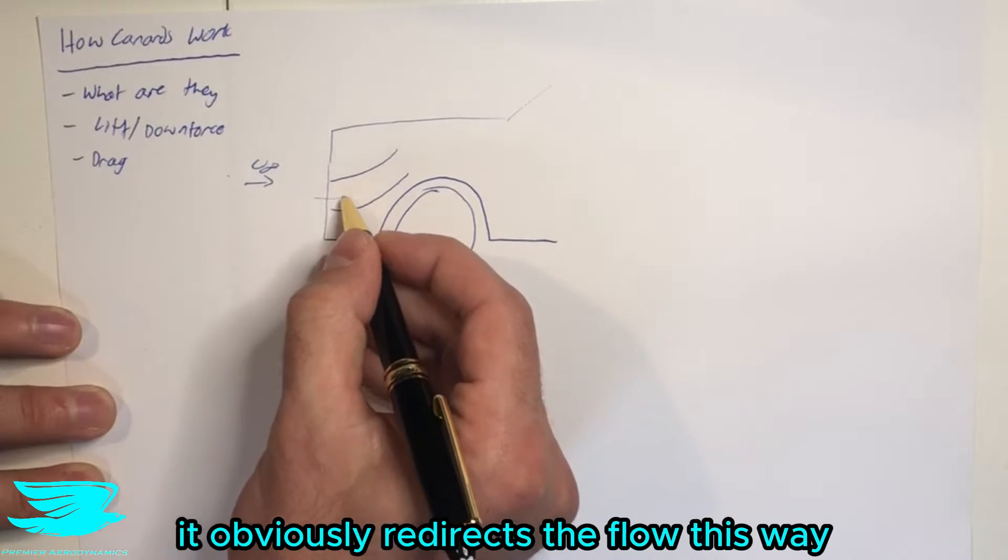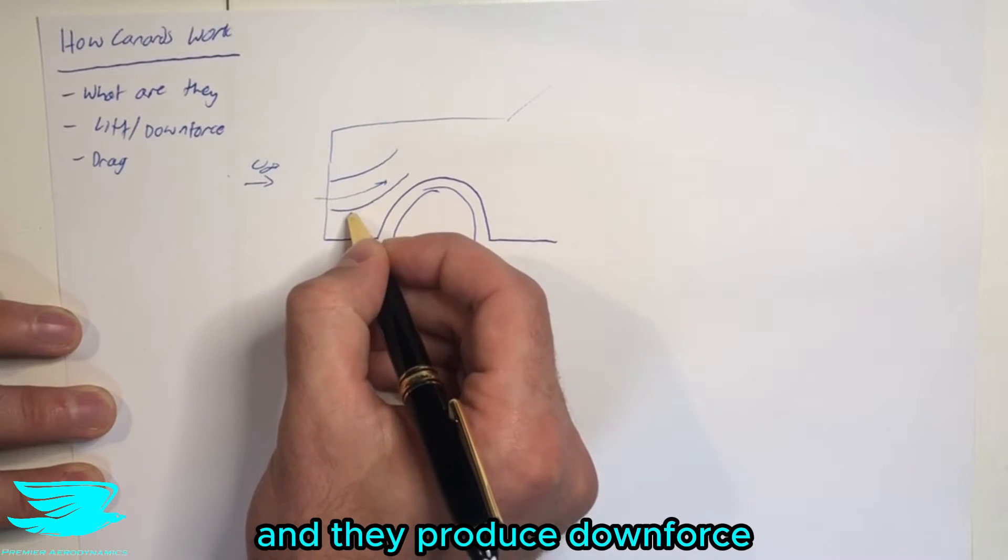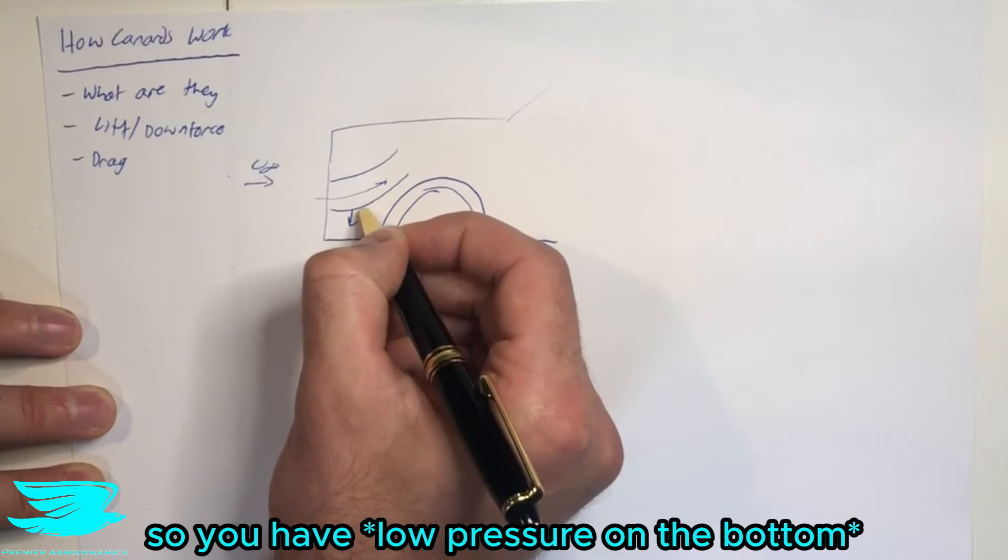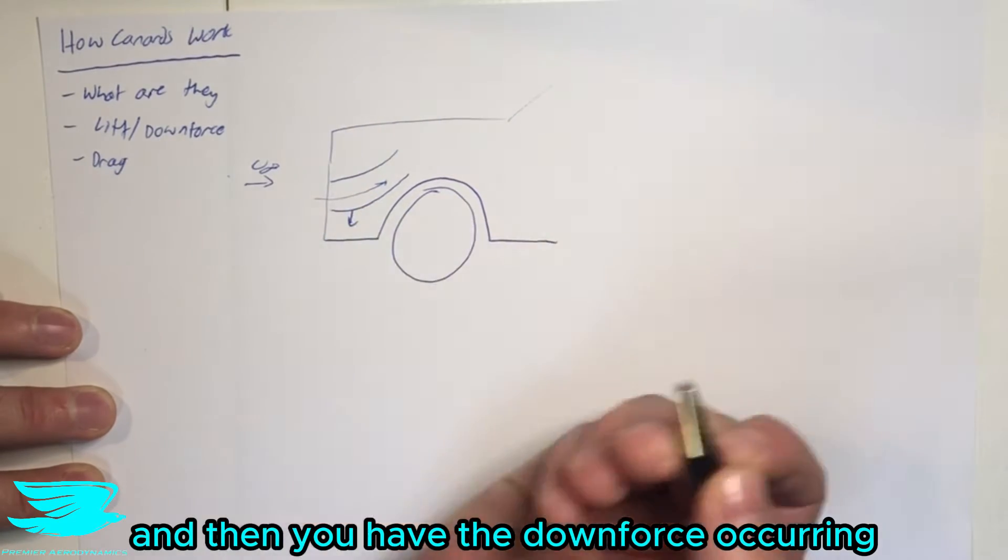And then as the flow comes along, it redirects the flow up this way, and they produce downforce. So you have low pressure on top, high pressure on the bottom, and then you get the downforce occurring.